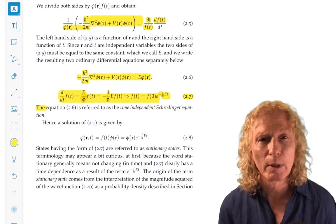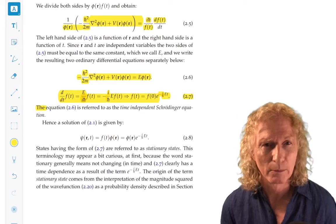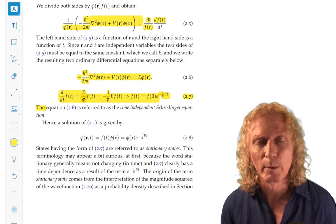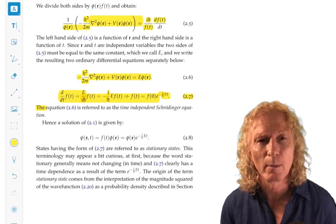The time-dependent part is trivial. We can solve that immediately, and it's some initial condition, f of zero, e to the minus iE over ℏ times t.